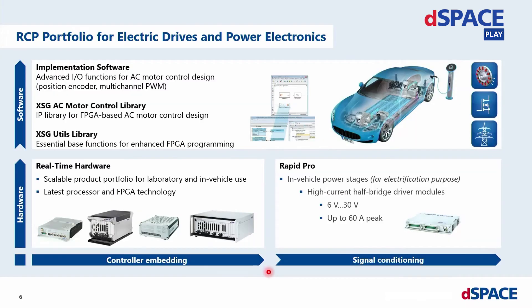Let's take a look at the eDrive use cases for RCP systems. dSPACE offers powerful function libraries for processor-based as well as FPGA-based design and control algorithm prototyping. The implementation software offers advanced I/O functions for AC motor control design, such as position encoders or multi-channel PWM. The toolchain provides easy implementation and debugging options for Simulink-based code generation. The hardware contains specific digital and analog I/O channels required for your control prototyping needs, and you can use the same hardware setup for different model versions.